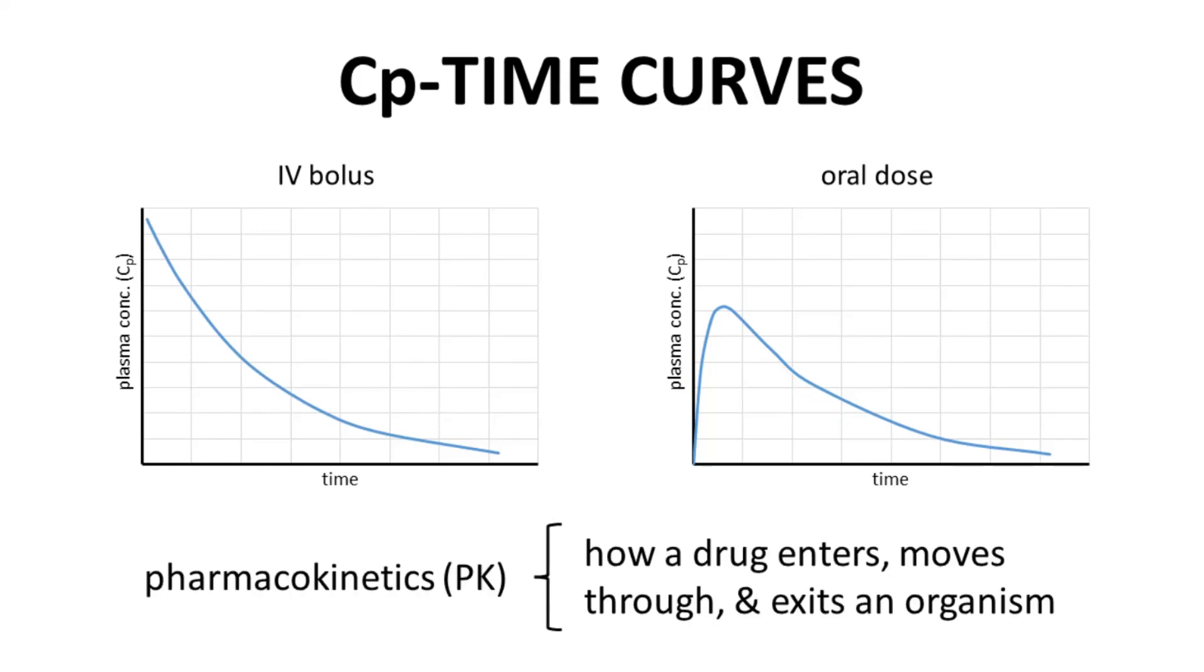The study of how a drug or other molecule behaves within a living organism as we see in these CP time curves is called pharmacokinetics or simply PK. Pharmacokinetics has many aspects but includes the mathematical modeling of these curves. One of the terms commonly associated with PK is half-life, which provides a general sense of how long a drug will persist in the body.